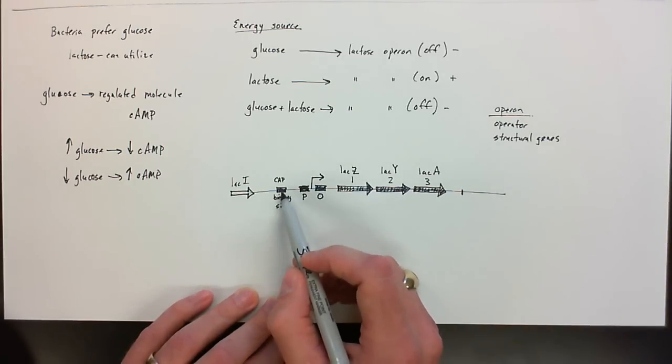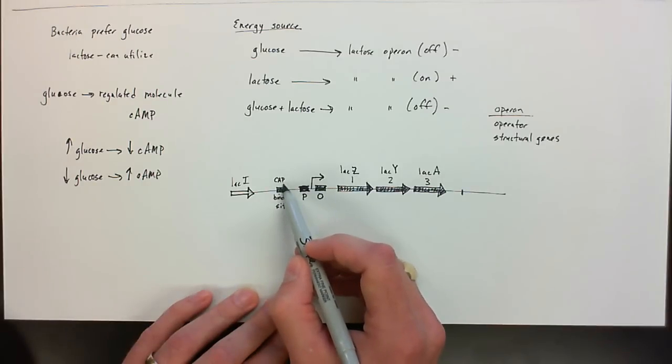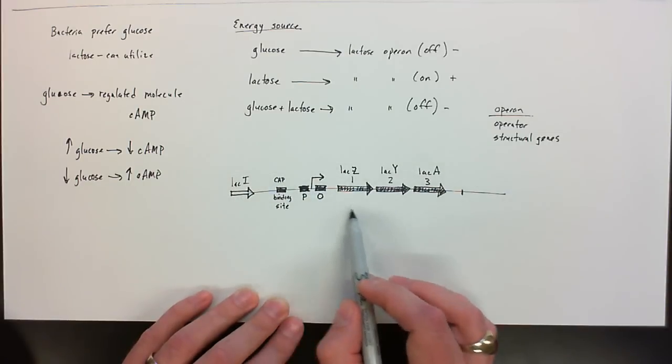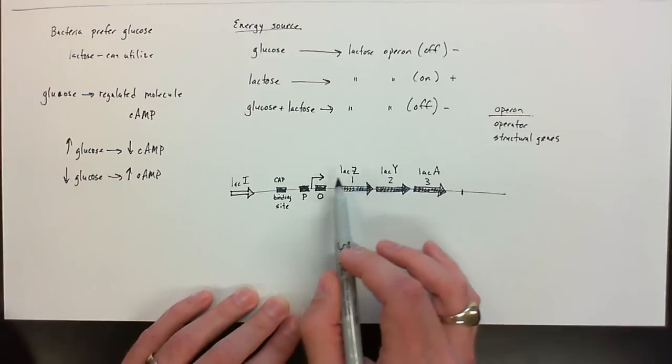Another form of regulation that we're going to determine as more of a positive type of regulation is this CAP binding site. This is catabolic activating protein. So we're going to see somewhere else there's going to be another protein that's involved that will bind here, and that's going to help control the expression of this operon.